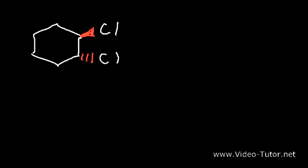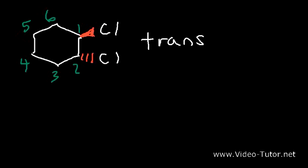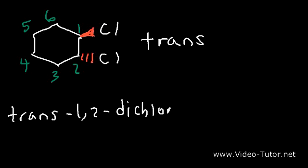What is the name of that compound? We have a wedge and a dash because one chlorine atom is in the front and the other is in the back — this is the trans isomer. We have a chlorine atom on carbon one and carbon two, and six carbon atoms total in the ring, so we have a cyclohexane ring. This is going to be called trans-1,2-dichlorocyclohexane.